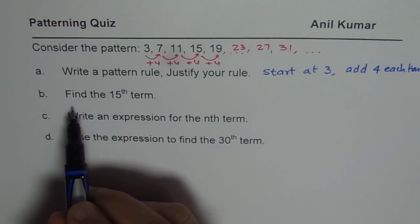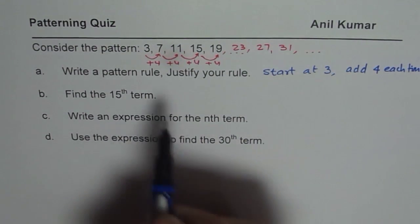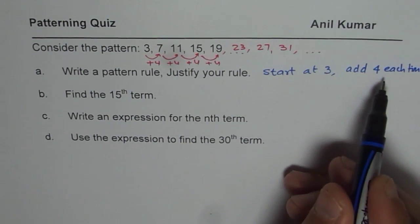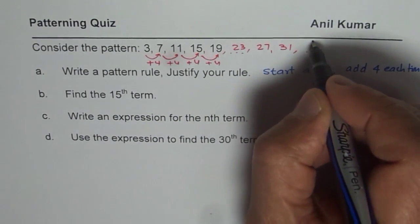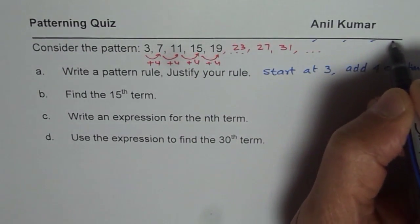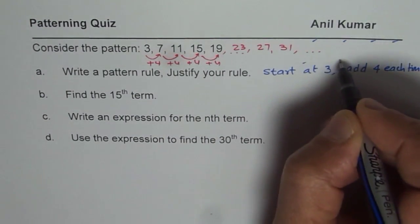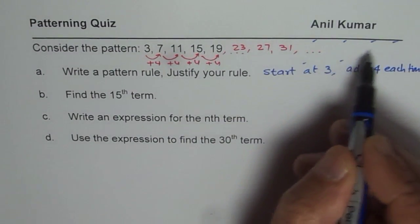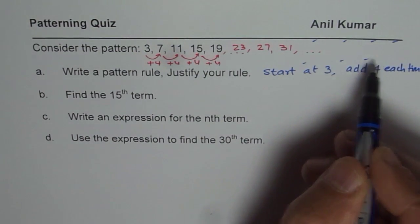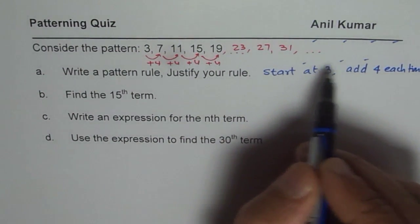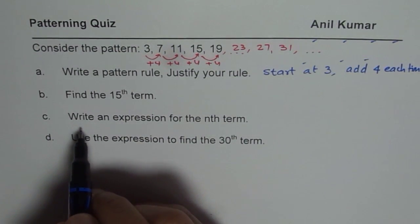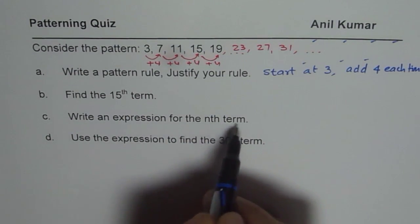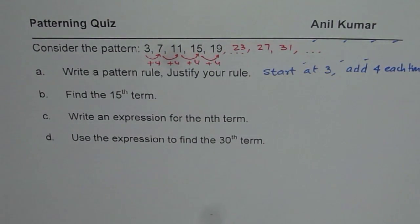Now, the second part of this question is, find the 15th term. So, one way to find the 15th term is utilizing your rule. So, we have got 1, 2, 3, 4, 5, 6, 7, 8, 9, 10, 11, 12, 13, 14, 15. So, we can add 4 so many times to get the 15th term. You can do that also. However, I will postpone it for you to do and skip to the next part of the question, which is, write an expression for the nth term.